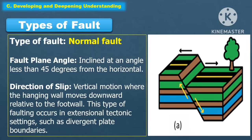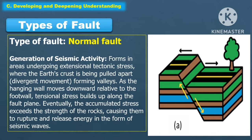The following are the types of faults. The first one is the normal fault. The fault plane angle is inclined at an angle less than 45 degrees from the horizontal. The direction of slip is vertical motion where the hanging wall moves downward relative to the foot wall. This type of faulting occurs in extensional tectonic settings such as divergent plate boundaries. Normal faults form in areas undergoing extensional tectonic stress, where the earth's crust is being pulled apart or diverging, forming valleys. As the hanging wall moves downward relative to the foot wall, tensional stress builds up along the fault plane.